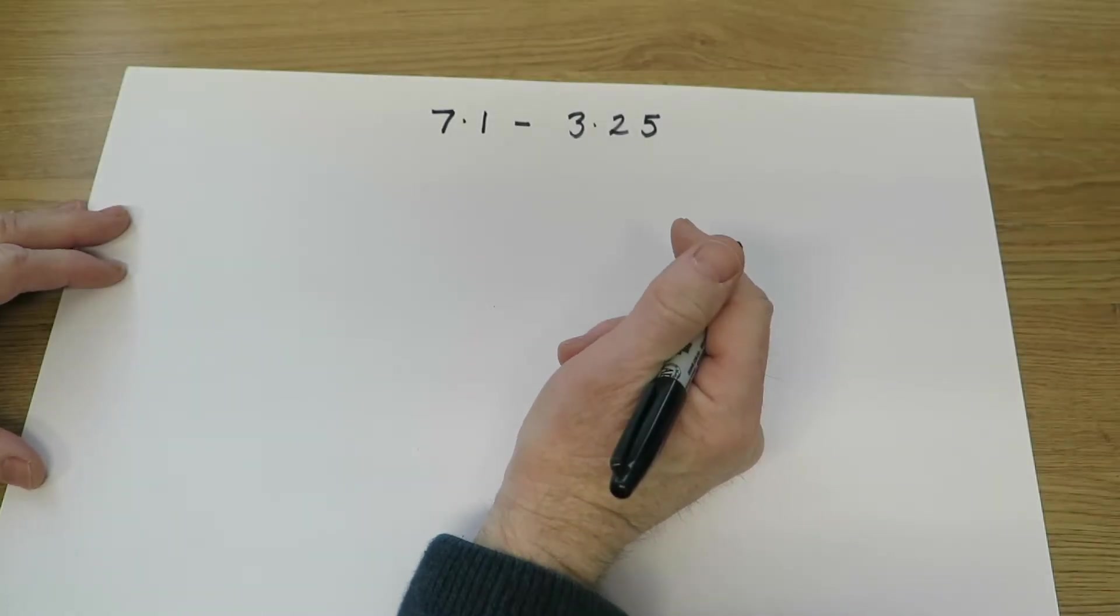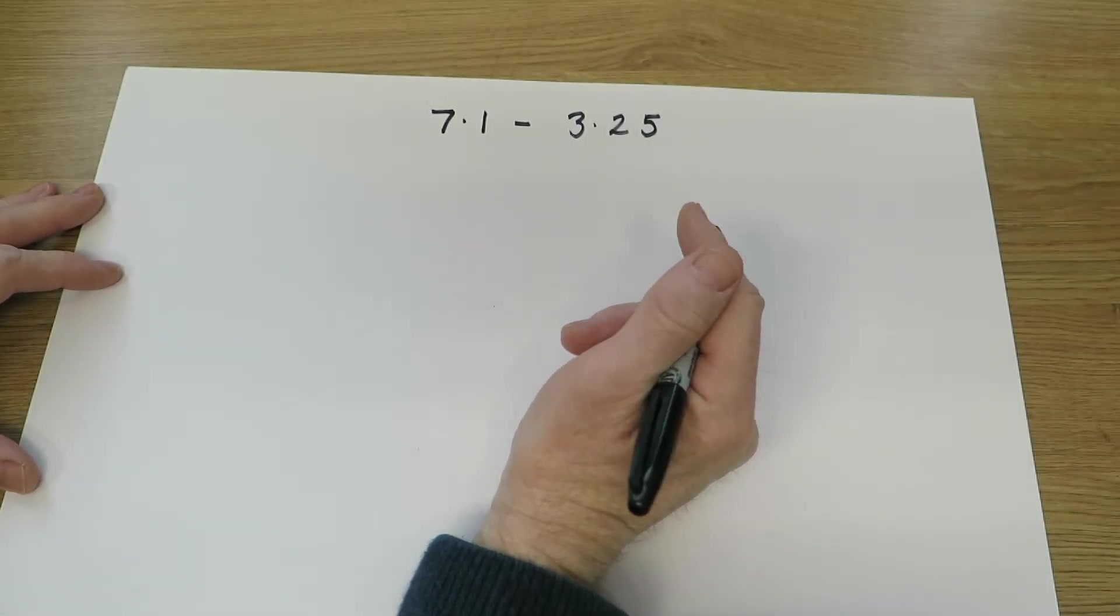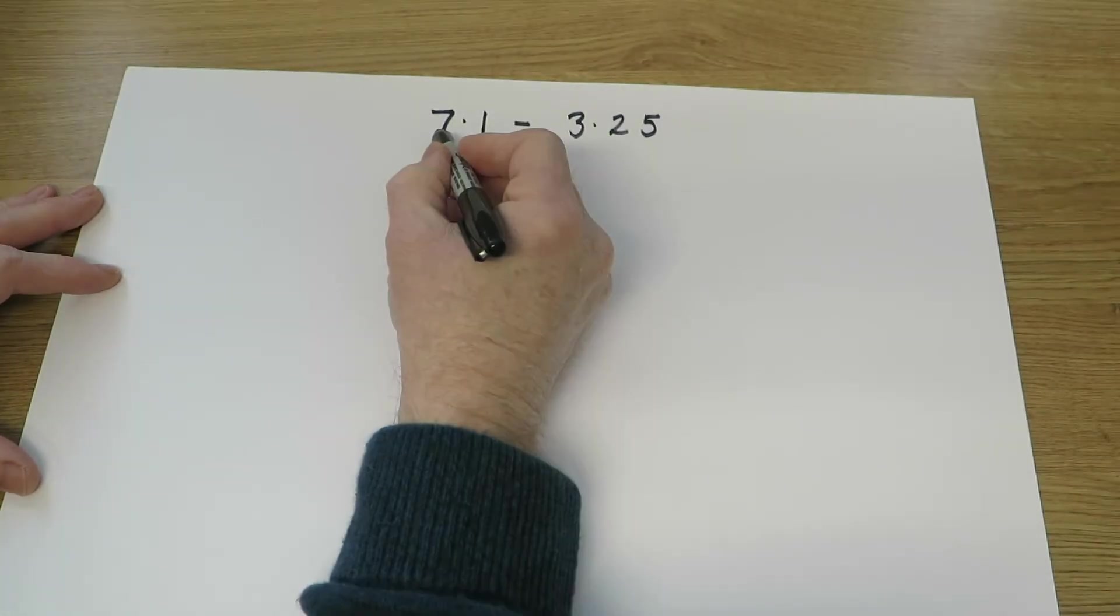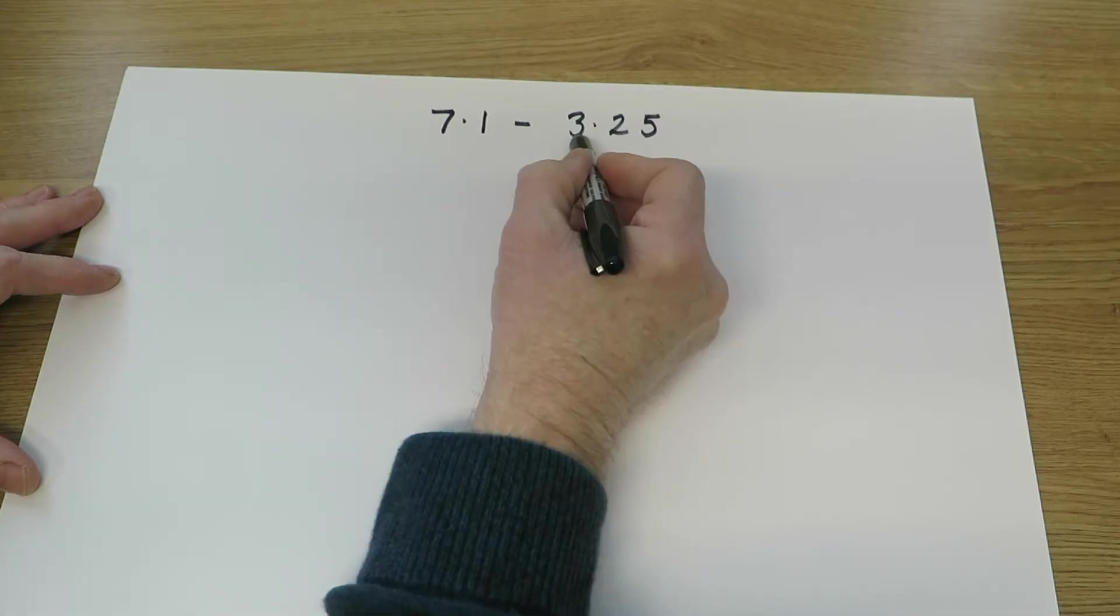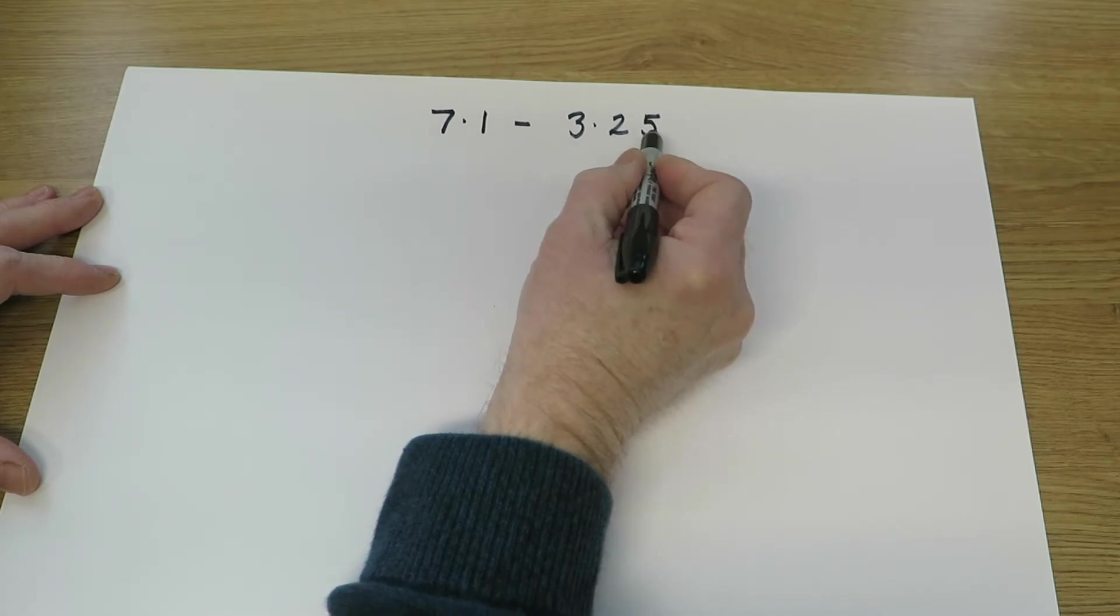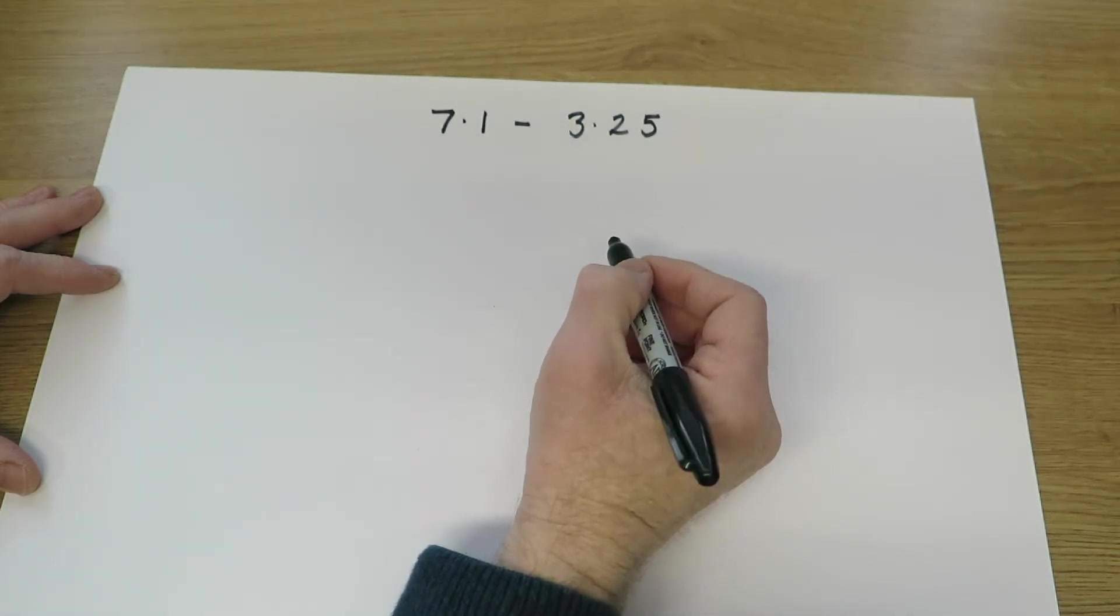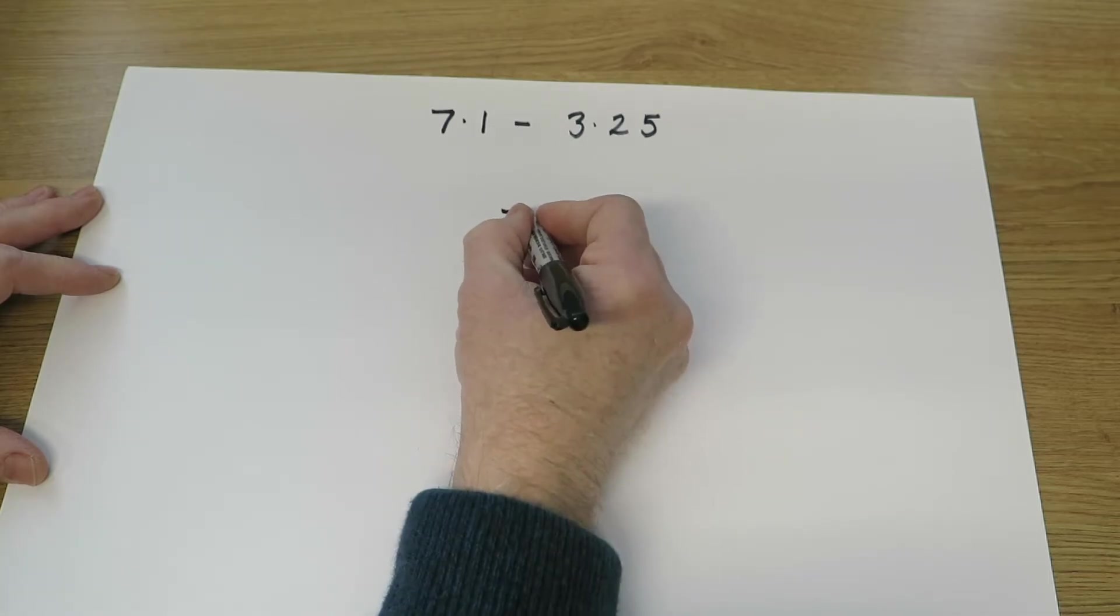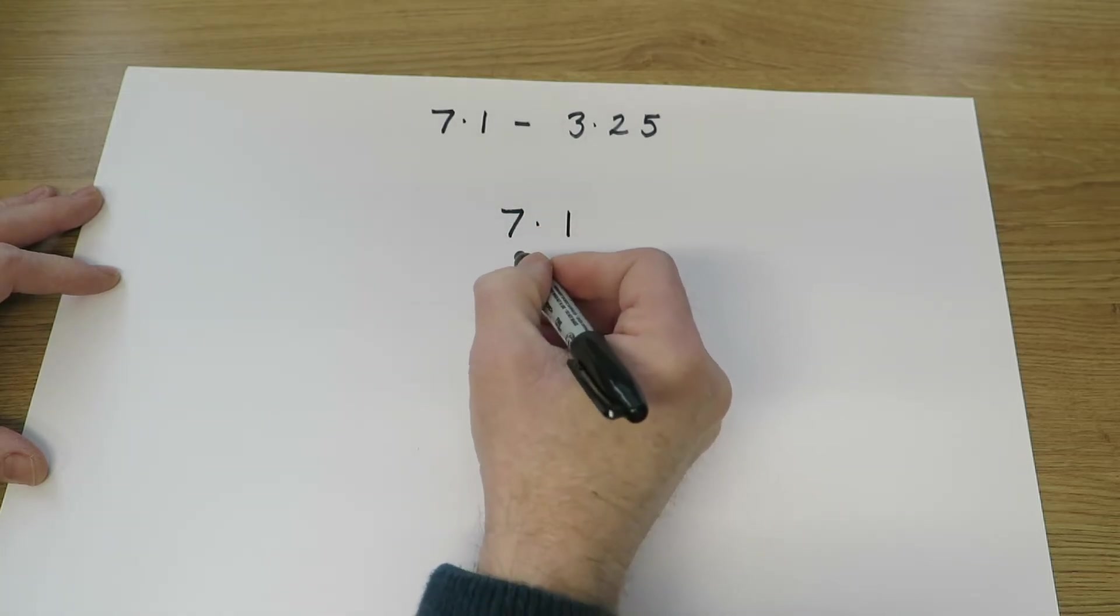The children are also able to move on to smaller numbers involving decimals. They need to know that that 7 represents 7 units. There's 1 tenth. There's 3 units. 2 tenths and 5 hundredths. So when they put them into columns, again, they need to get the units in line.